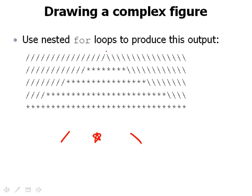The first line is sort of an exception in that there are no stars, but you could think of it as following the same pattern with just zero stars in the middle. The overall way we approach these problems is to look for the repetition and try to use nested for loops to capture it.